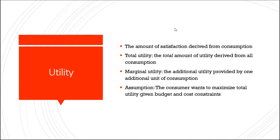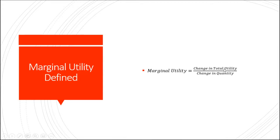People want to get the most out of what they have given the constraints that they face. Total utility is the total amount of satisfaction derived from all their consumption choices. Because economics is thinking on the margin, we're primarily concerned with marginal utility — the additional amount of satisfaction provided by one additional unit of consumption. Mathematically, marginal utility is defined as the change in total utility over the change in quantity. Importantly, marginal utility can be negative if your total utility starts to fall as you consume one more item.